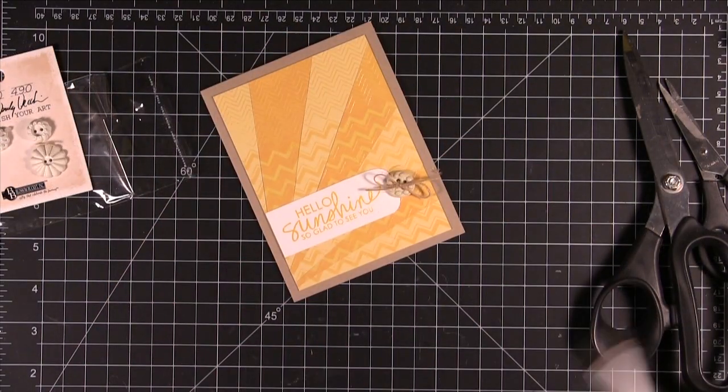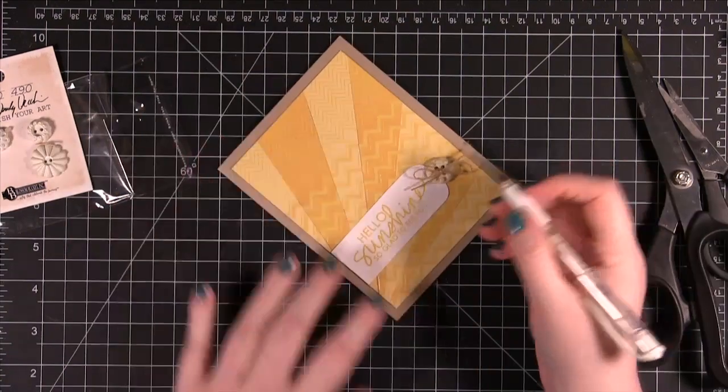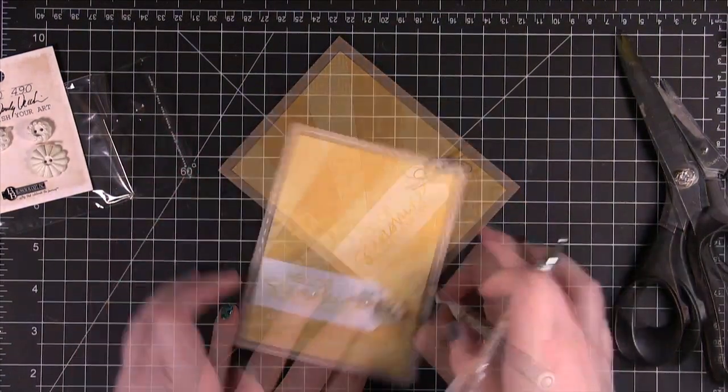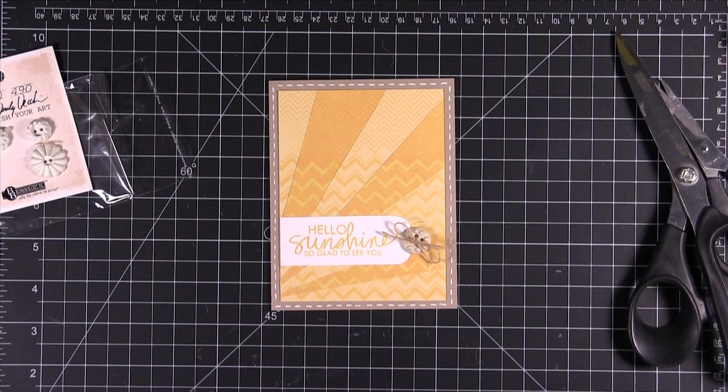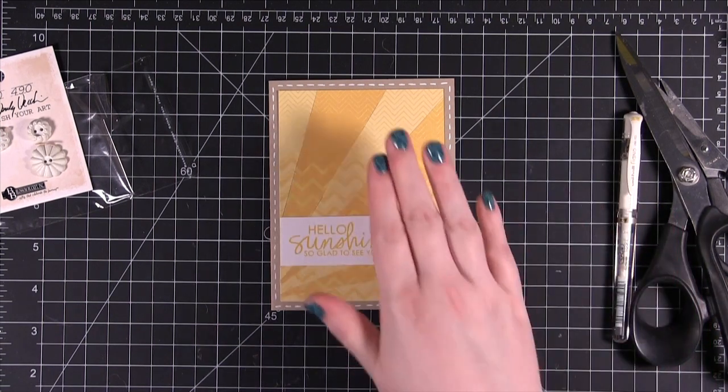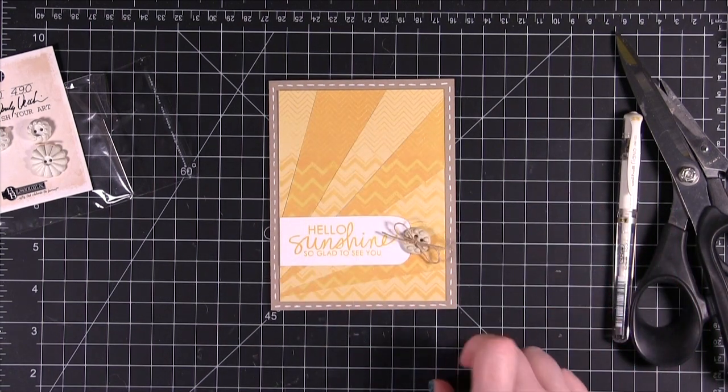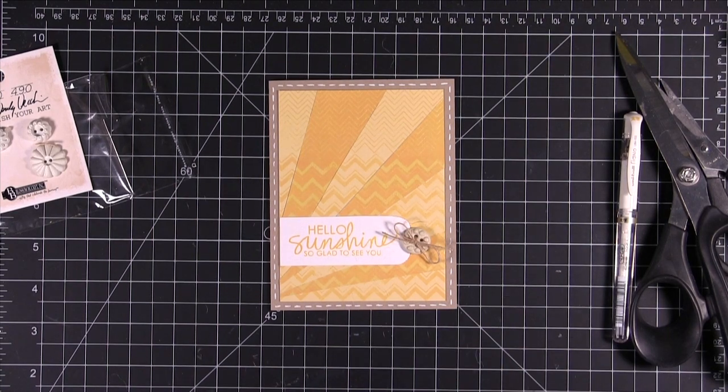All right, and I'm going to go around the outside edge of the card with white dashed lines. All right, and there's the card for today. I hope you guys enjoyed. And don't forget you can download that template over at the Simon Says Stamp blog. And I'll catch you guys next time. Thanks for watching.